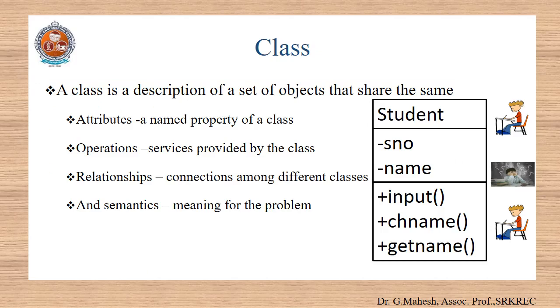Let us see what is meant by a class. A class is a description of set of objects that share the same attributes, operations, relationships and semantics. So, a set of similar objects are grouped together as a class.